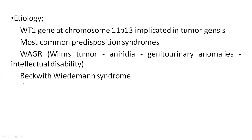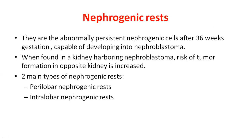The other predisposing syndrome is Beckwith-Wiedemann syndrome, also known as organomegaly syndrome, in which along with Wilms tumor there will be macroglossia — meaning enlargement of the tongue — hemihypertrophy, and enlargement of a few other organs as well.